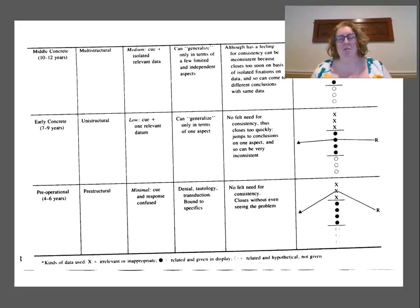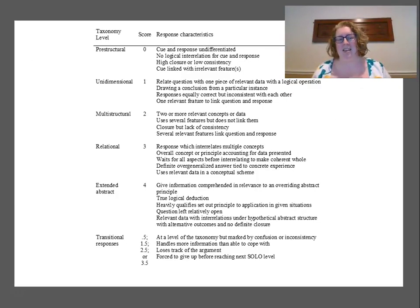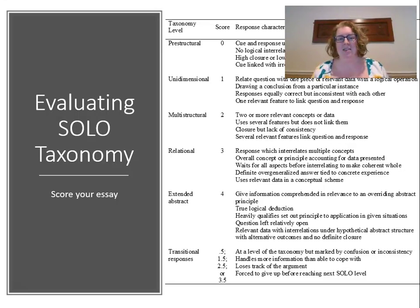You can print out this rubric, which starts with pre-structural, unistructural, multi-structural, and then on to relational and extended abstract. It can also look like this — I like this version because it has transitional responses with 0.5 scores, so we can be a little more flexible in how we assess. I'll scroll through and we'll talk in more detail when we get to the clearer page.